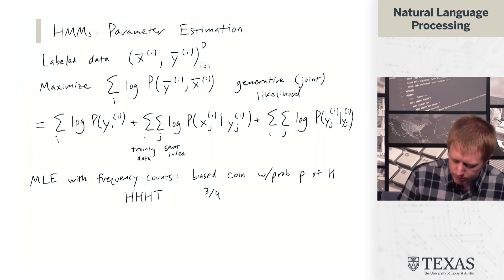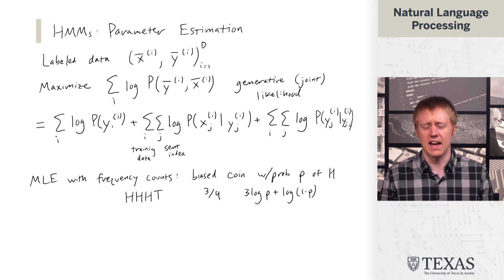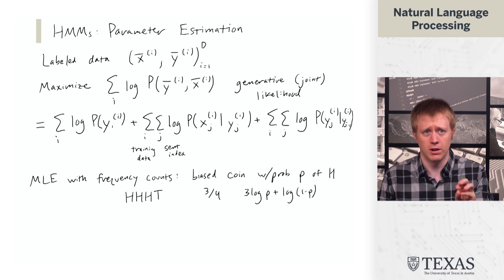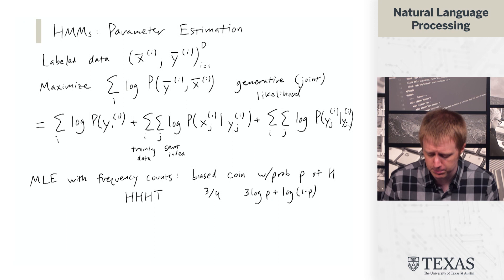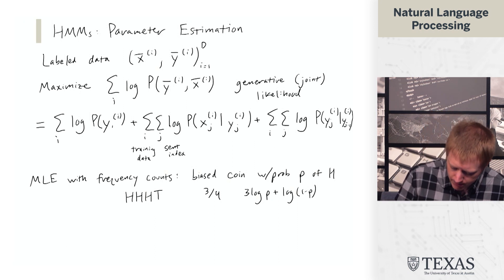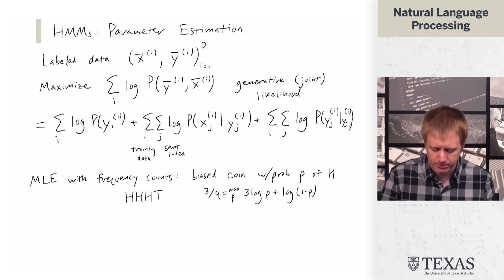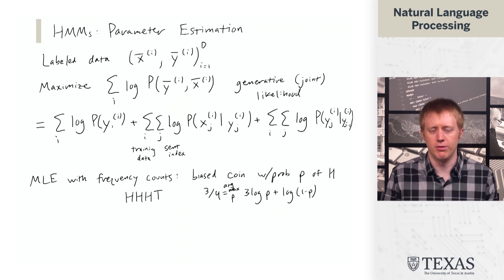And so the way you can validate this for yourself is the likelihood of this data is three log p plus log of one minus p. And that's just basically saying the log probability of the first event h is log p, log p, log p, and then log one minus p because tails shows up with probability one minus p.